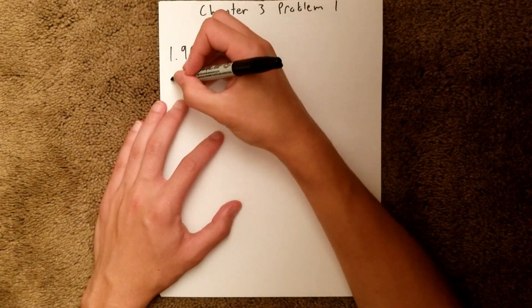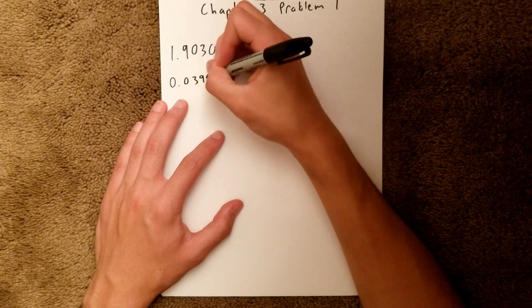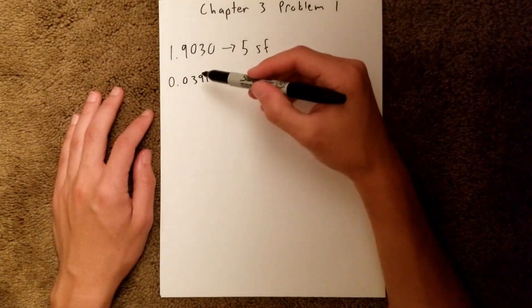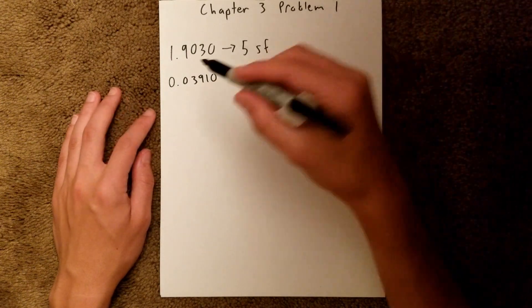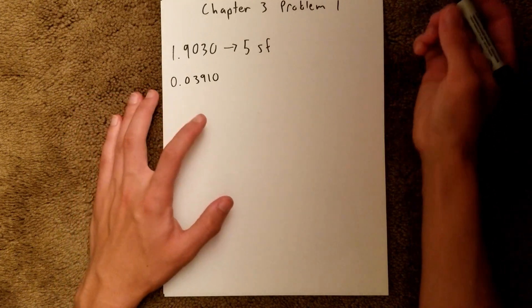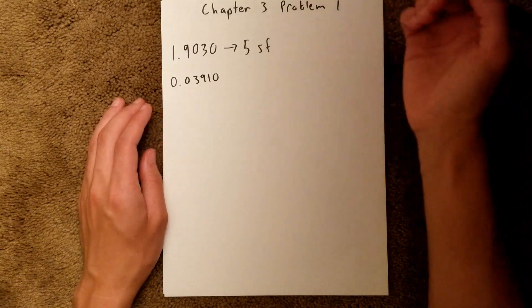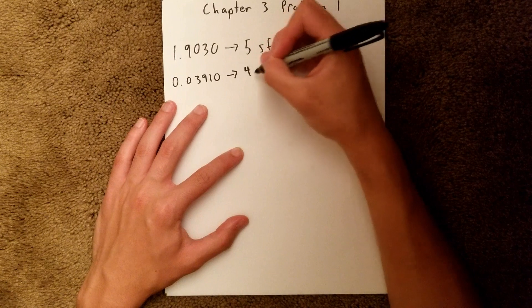And our next value is 0.03910. In this case, we have these three significant figures because they are non-zero. These two zeros before don't matter. Any zeros before a non-zero number are always insignificant. And again, this zero is significant because it's at the end and it's past the decimal point. So in this case, we have four sig figs.